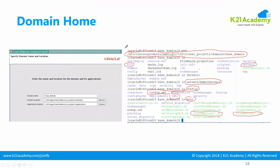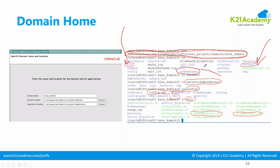This is my base domain, or Domain Home. Inside that I have a bin folder. The bin folder will have all the start and stop commands. My servers folder will have my Admin and Managed Servers. My node manager folder will have Node Manager. In 12c, you can decide to have Node Manager here or in some other place as well.